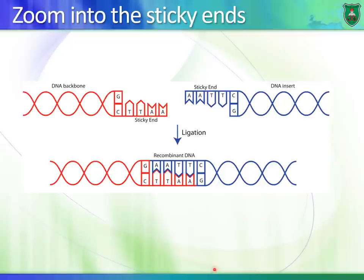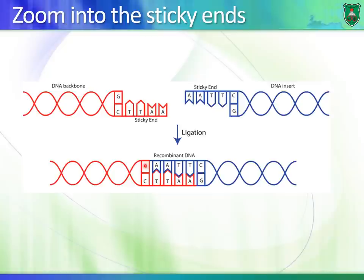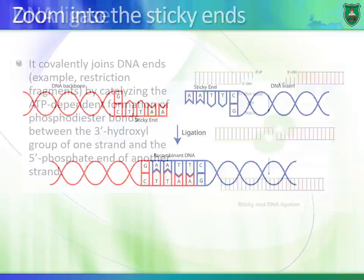Here is another look: a cut between G and A results in two restriction fragments with sticky ends. These ends can form hydrogen bonds with each other, but there is no phosphodiester bond. We can form a phosphodiester bond between them using an enzyme known as DNA ligase. This action is known as ligation — like gluing the two fragments to each other.